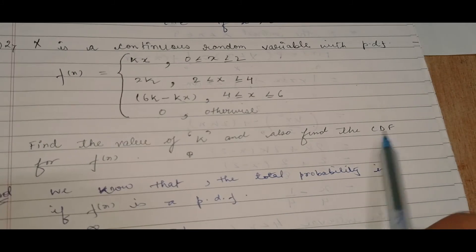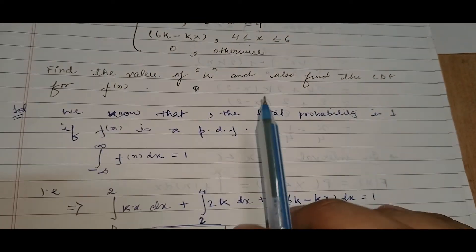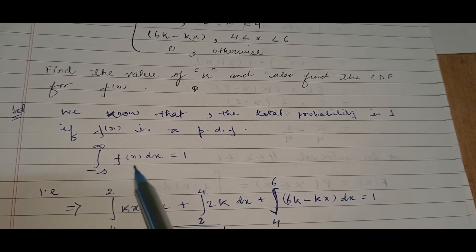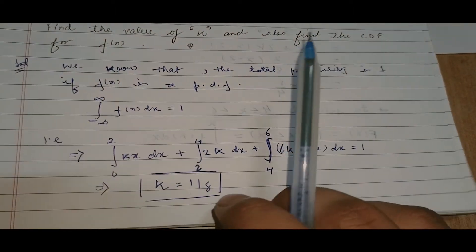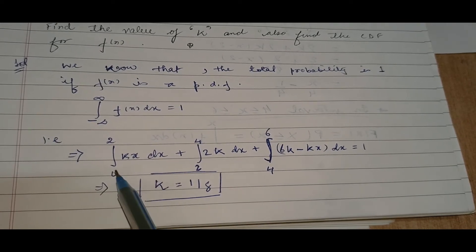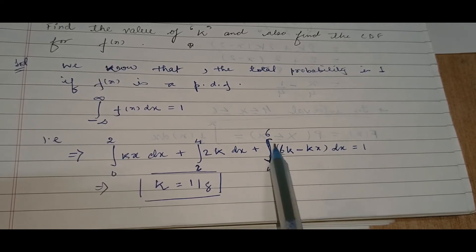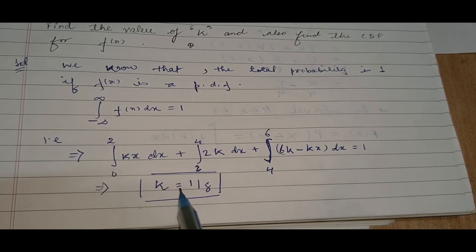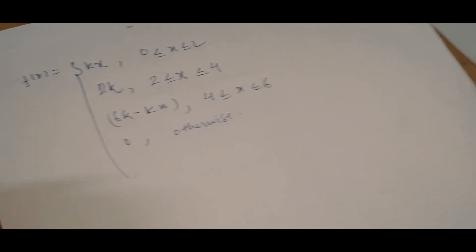To find k, we use the property that the integral of f(x) dx from minus infinity to infinity equals 1, so we add all intervals: the integral from 0 to 2 of kx dx, plus 2 to 4 of 2k dx, plus 4 to 6 of (6k minus kx) dx equals 1. Solving this gives k equals 1/8.